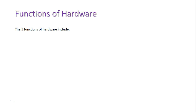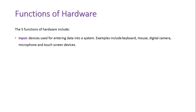The first one we're going to look at is input, and input relates to the devices that are used to put data into a computing system. Examples include a keyboard where we can enter text into a computer, a mouse where we can click on icons on our screen, a digital camera for inserting images into a computer, microphones for audio, as well as touch devices that take touch input such as touch screens and touch pads.